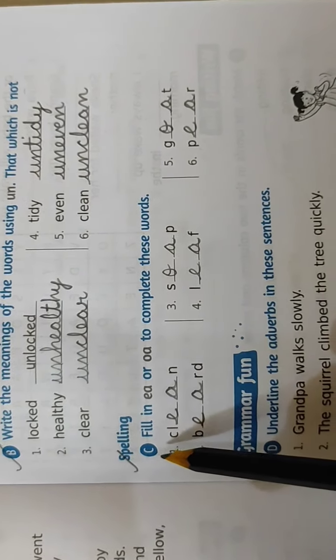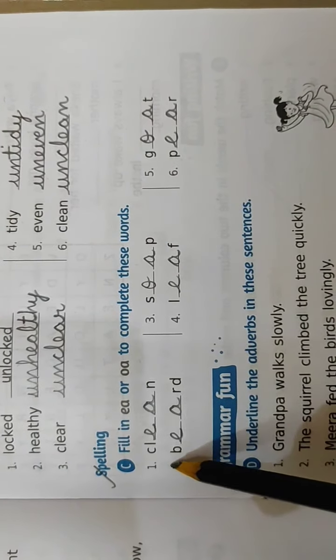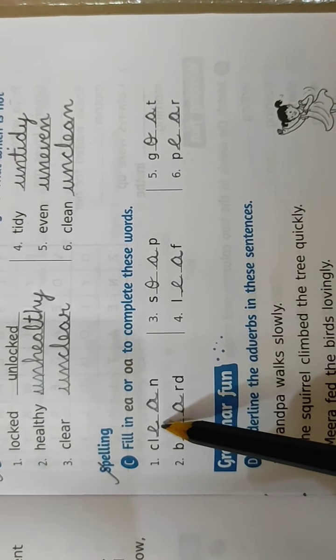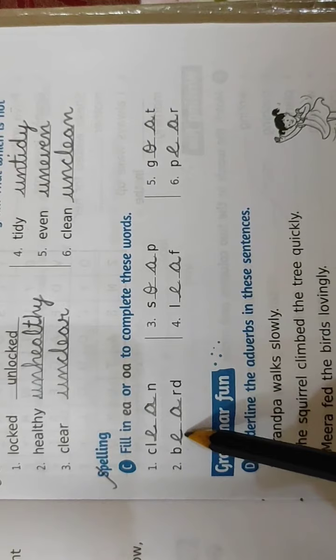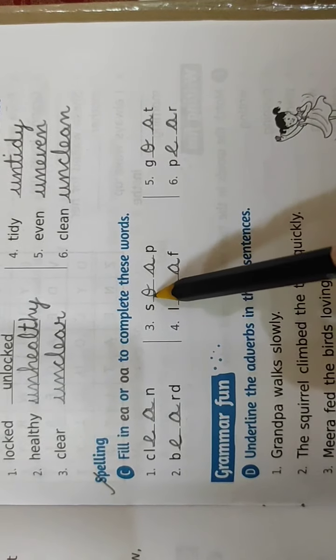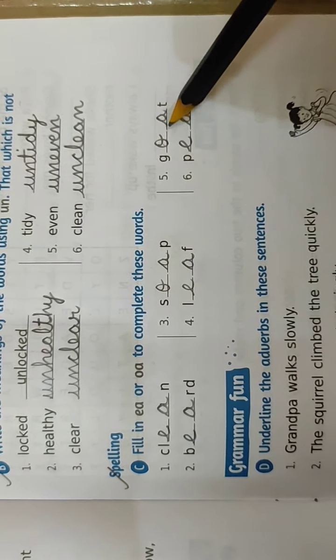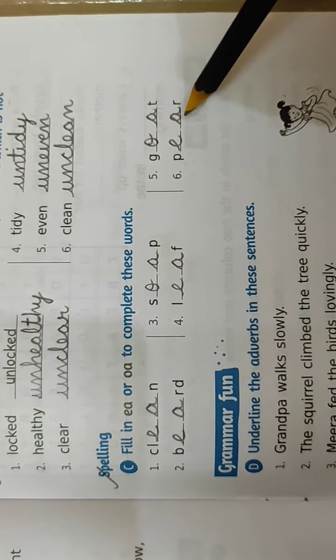Now the next question is, question number C. Fill in E-A or O-A to complete these words. The first one is C-L-E-A-N, clean. In the blanks you will write E-A here. Number 2 is B-E-A-R-D, beard. Number 3 is S-O-A-P, soap. Number 4 is L-E-A-F, leaf. Number 5 is G-O-A-T, goat. And last number 6 is P-E-A-R, pear.